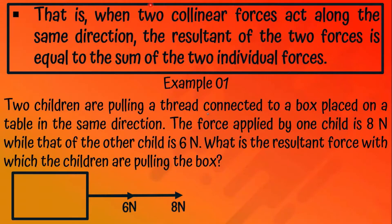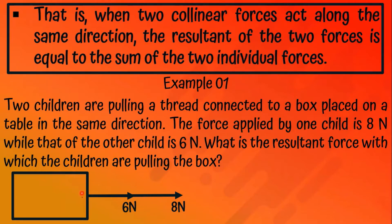The observation and conclusion of this activity is: when two collinear forces act along the same direction, the resultant of the two forces is equal to the sum of the two individual forces. So if we call the resultant force X, the sum of the two individual forces equals X — the resultant force acting on the object.